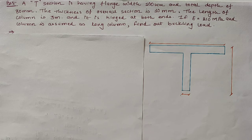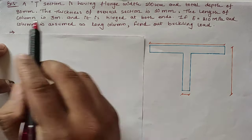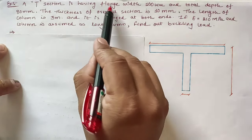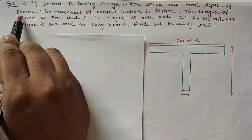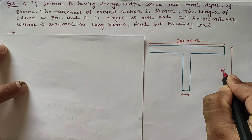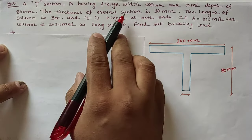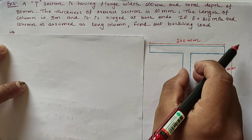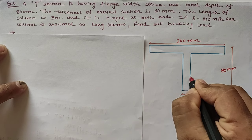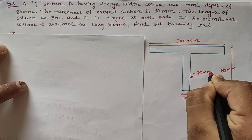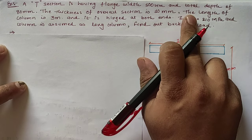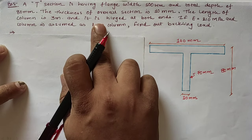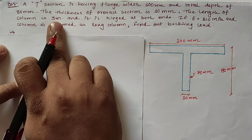Today we are going to calculate the collapse load for a given T-section assumed to be a long column. The cross-sectional dimensions are: flange width 100 mm, total depth 80 mm, flange and web thickness both 10 mm, giving a web depth of 70 mm. The column length is 3 meters, hinged at both ends, so the effective length equals the overall length of 3000 mm.